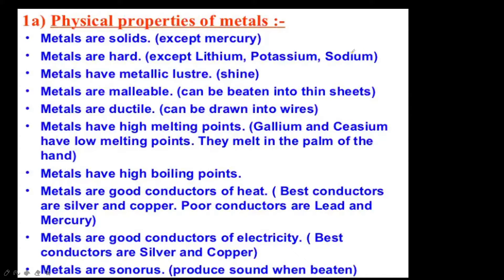Elements are classified into metals, non-metals, and metalloids or semi-metals on the basis of their chemical properties. Metals appear on the left hand side and middle part of the periodic table, and non-metals appear at the right hand side. There are 19 non-metals — out of these, 7 are solids, 11 are gases, and only one is liquid at room temperature. Can you guess which non-metal is liquid at room temperature? Write it in the comment section.